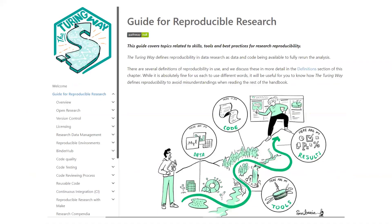One resource that would be very good for getting a sense of these practices is the Turing Way — it's not the only guide out there, but I think it's a very good one and it's collaboratively and continuously developed by a community. Their guide for reproducible research includes things like version control, licensing, code quality, code testing, and code reviewing — all very important skills and things to take into account.